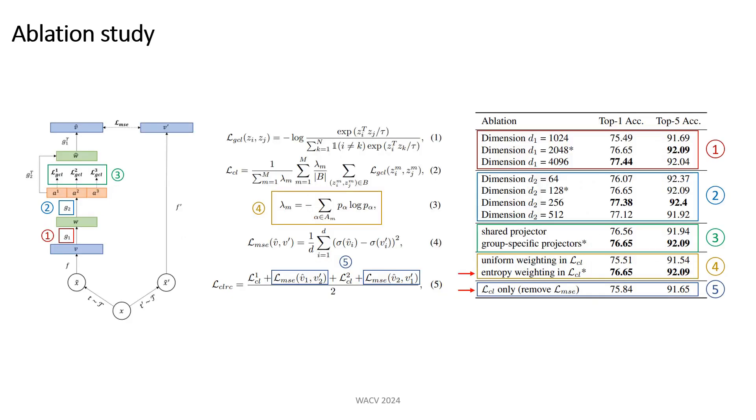Finally, we conduct an ablation study on the ImageNet-100 dataset to study the effectiveness of each proposed component. Particularly, the two most important components are the entropy weighting term used in the contrastive learning loss and the feature reconstruction loss.